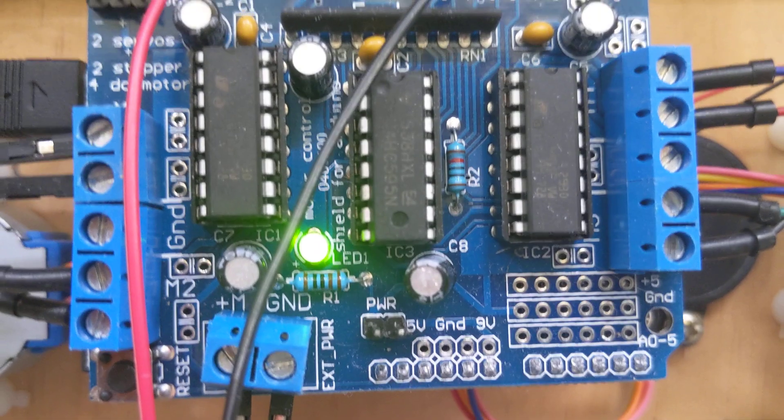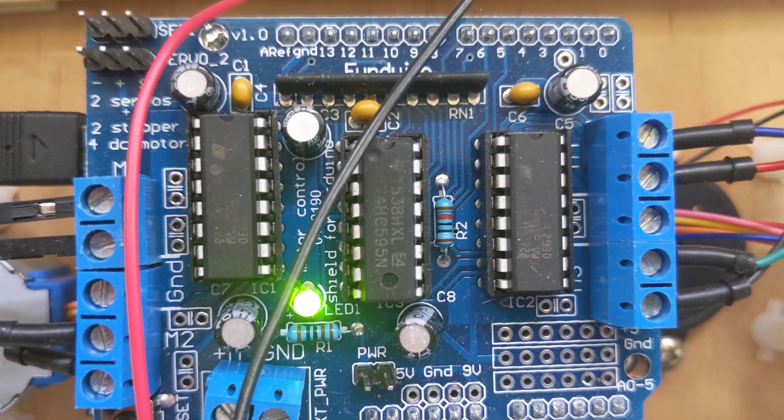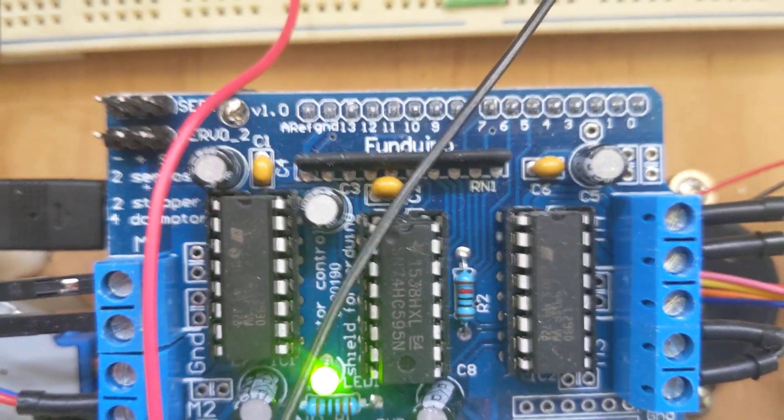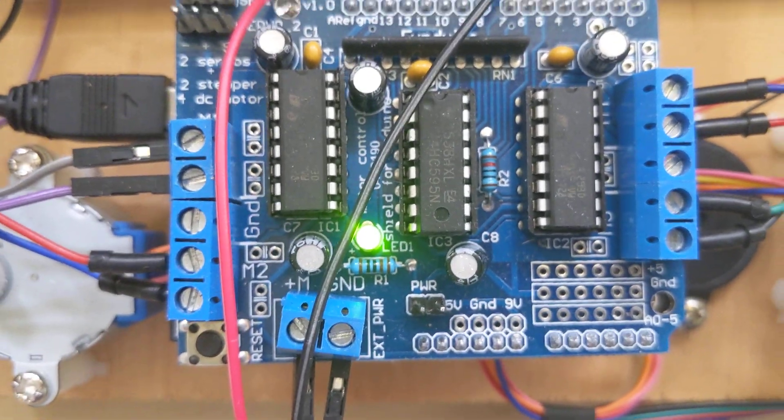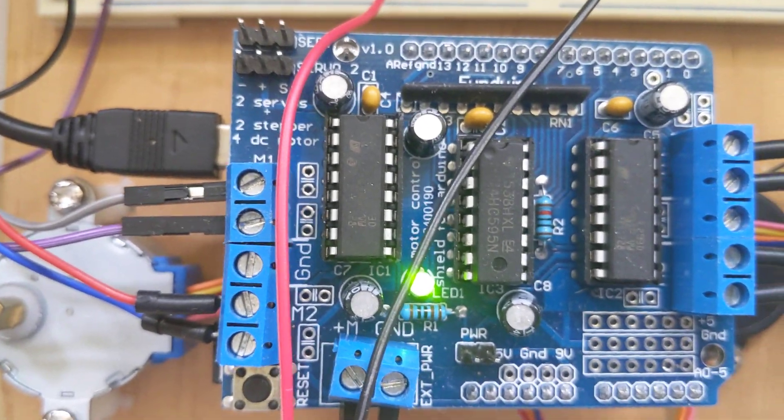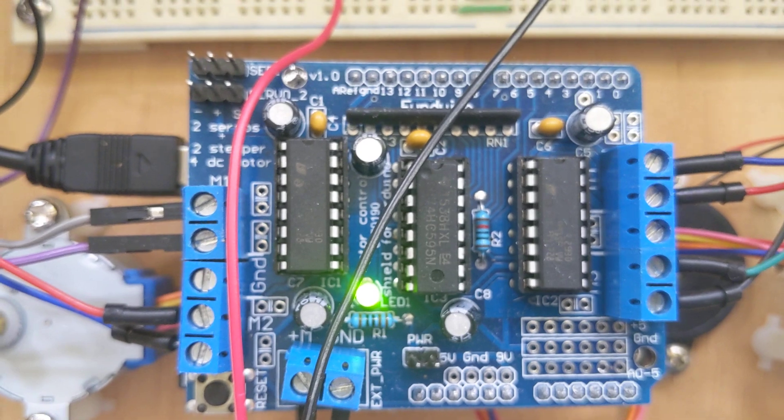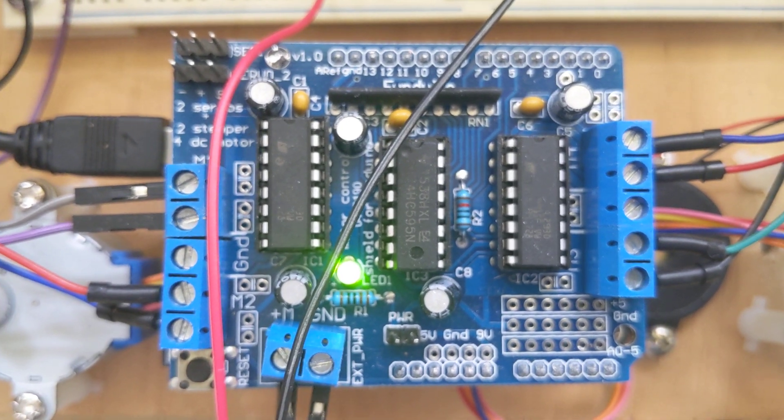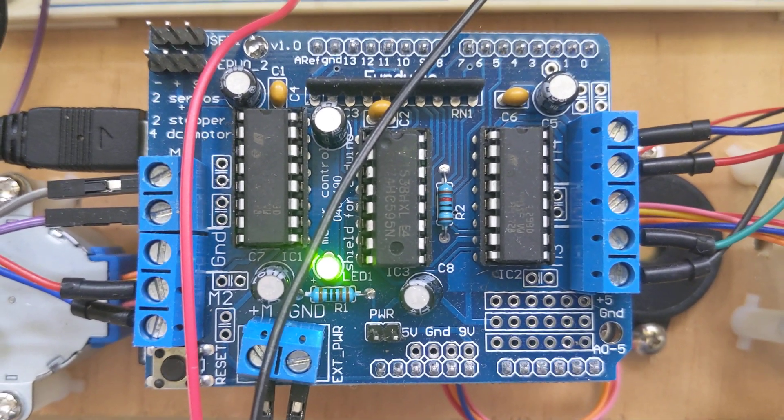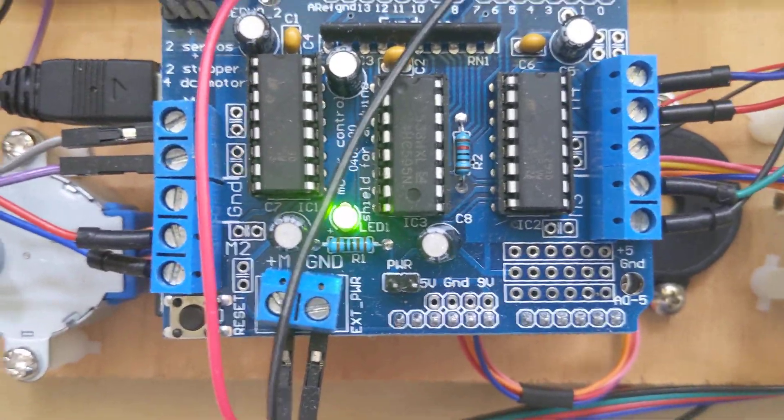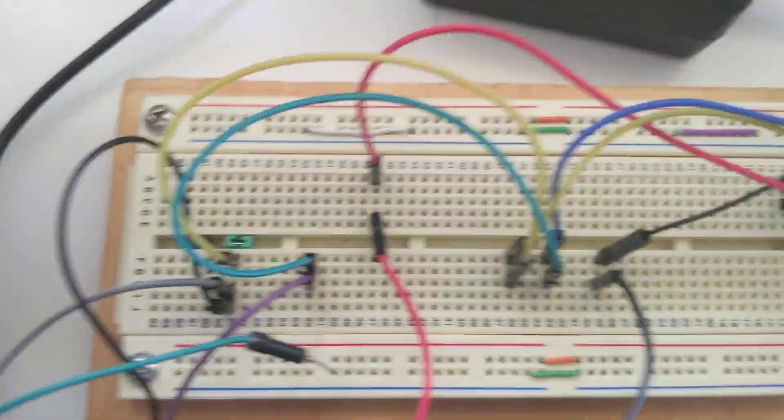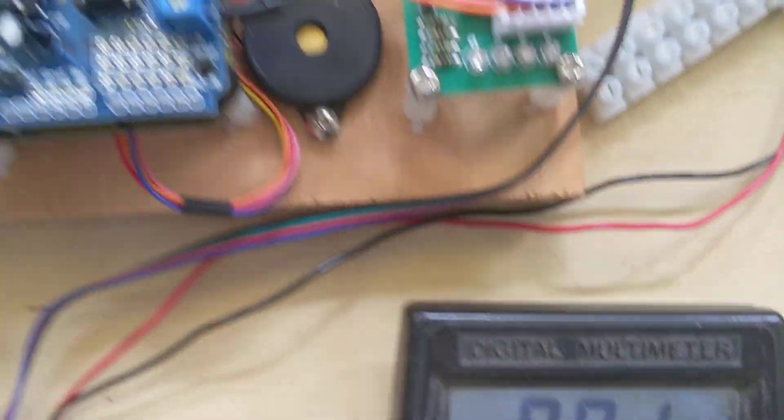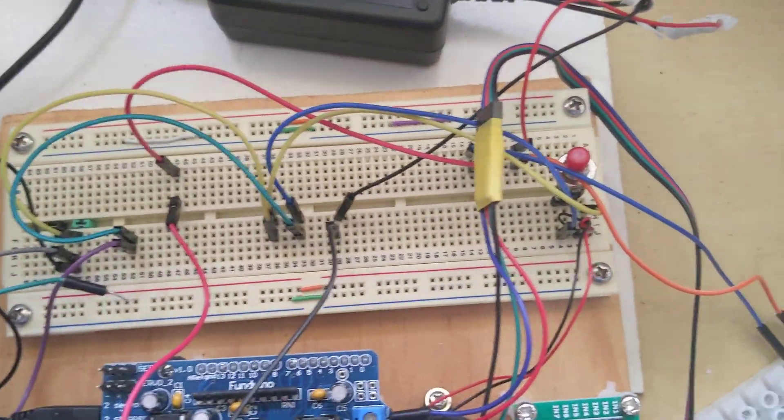And this is the Funduino board, which is a clone. Yeah, there's a previous video about that. I'll put the circuit up. And all this other stuff is just connections to an ammeter here. It shows the current, and that's pretty much it.